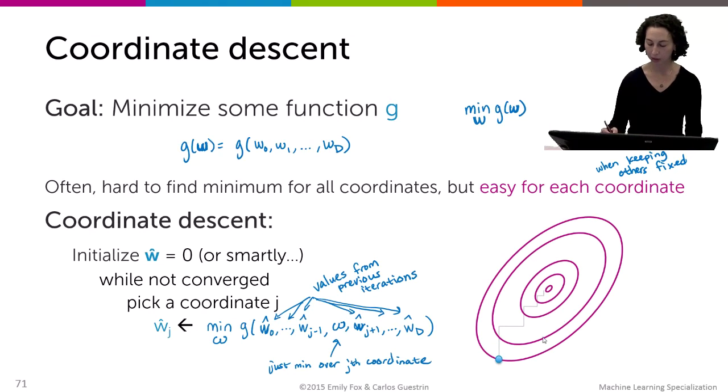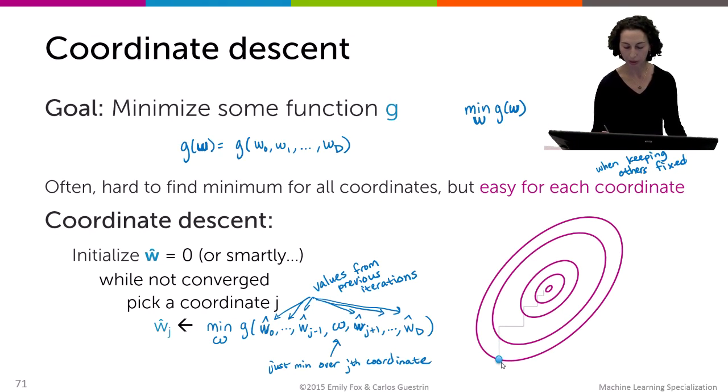So let's look at a little illustration of this just in two dimensions. So here just be w0, w1. And we're going to pick a dimension. So let's say we choose optimizing the w1 dimension, keeping w0 fixed. So I'm just going to look at this slice.